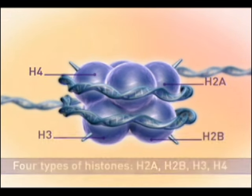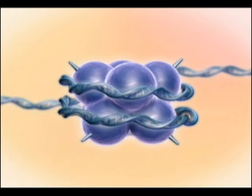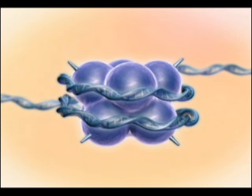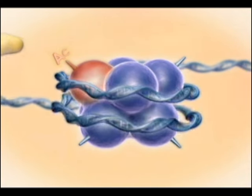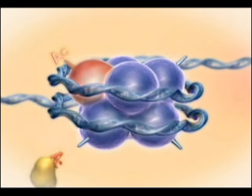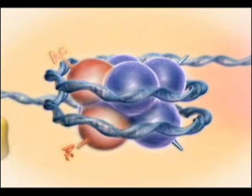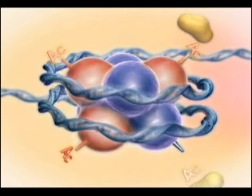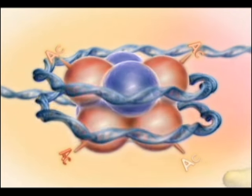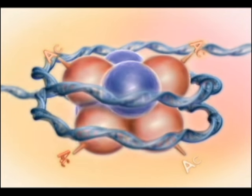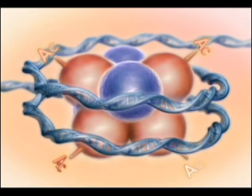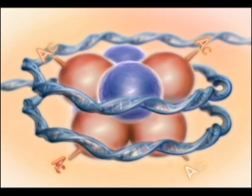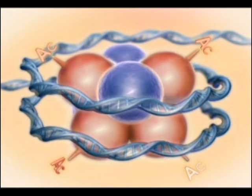Epigenetic modifications, such as histone acetylation, occur at the amino terminal tails of the histones that protrude from the nucleosomes. Acetylation of histones is generally acknowledged to play a key role in the regulation of gene expression.